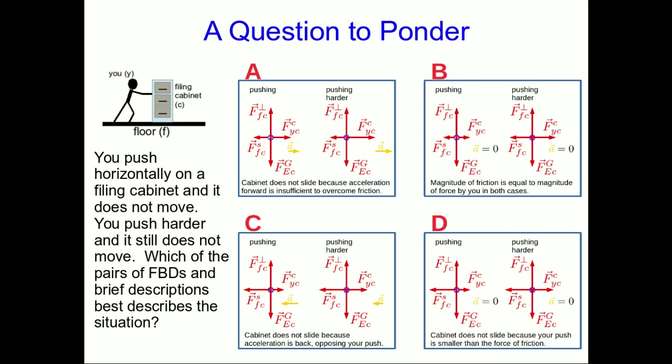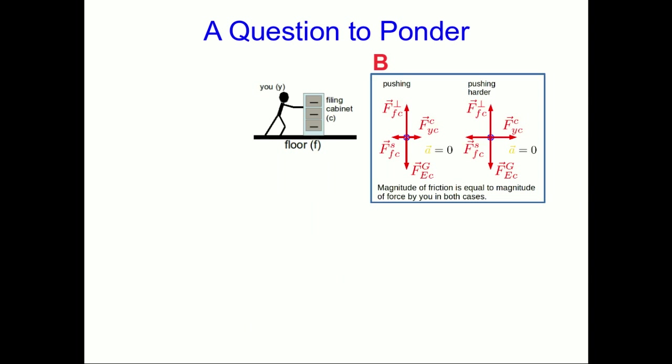And if you're in my course and doing this through Moodle, you already know that the correct answer is B. The friction force by the floor and the force that you exert on the filing cabinet are exactly matching in magnitude. That's why the acceleration is zero and the cabinet does not move.